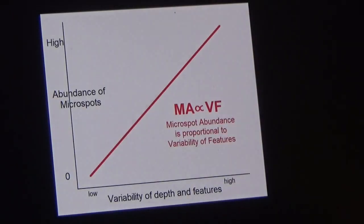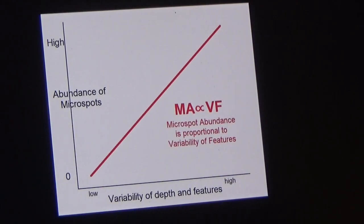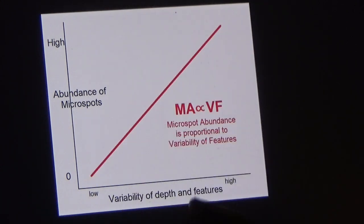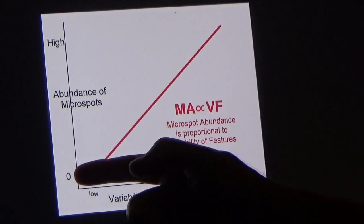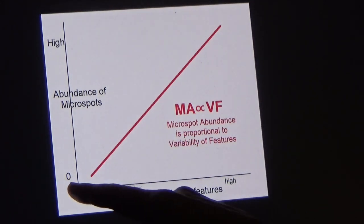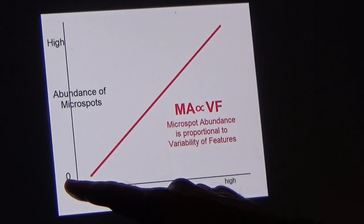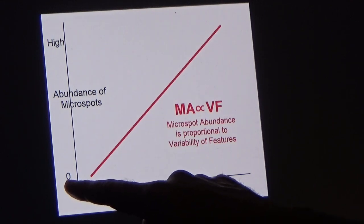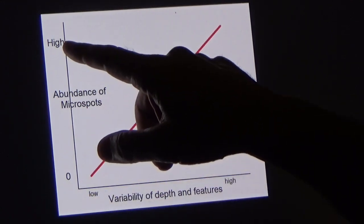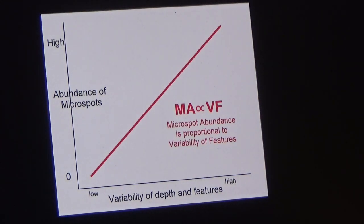Here we see a really simple chart which represents the relationship between the abundance of micro spots, shown on the left, and the variability of depth and features in an area. On the left axis we have zero — in some places there really aren't micro spots, and in some places there are a high number.